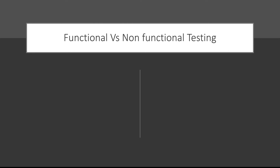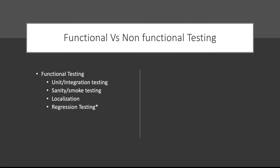In black box testing we can divide it into functional testing and non-functional testing. Functional testing includes unit testing, integration testing, sanity testing, smoke testing, localization testing, and regression testing. These test actual features and whether they are working or not. Regression testing gets a star because some people don't consider it functional testing and give it a separate category, but it is a kind of functional testing — you are testing older functionality, not new functionality.